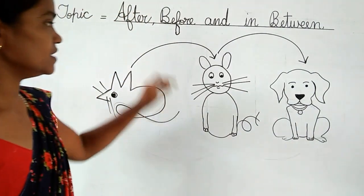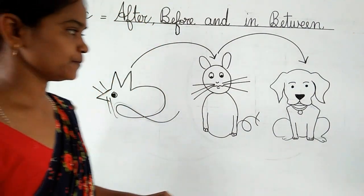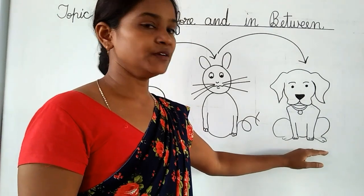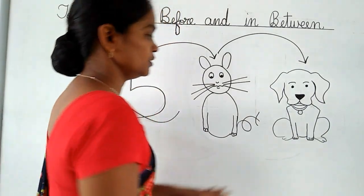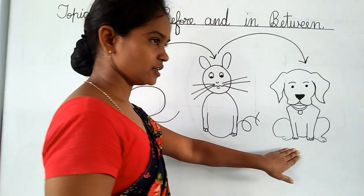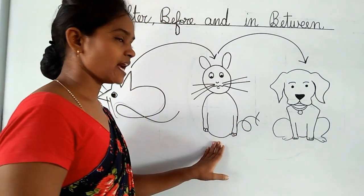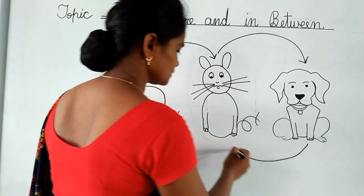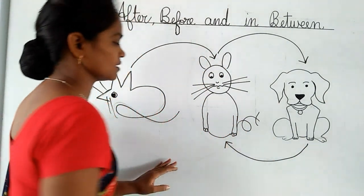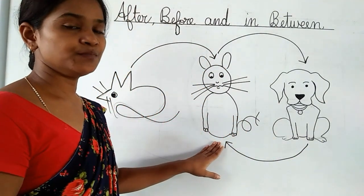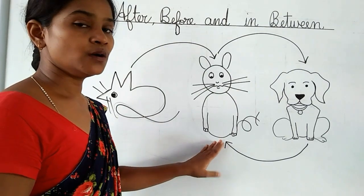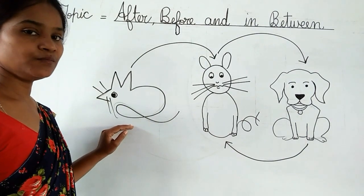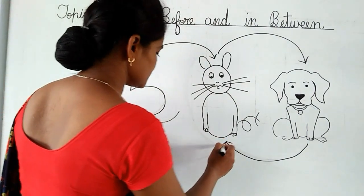Now we will learn about before. Who is before the dog? Yes, cat is before the dog. Who is before the cat? Yes, rat is before the cat.